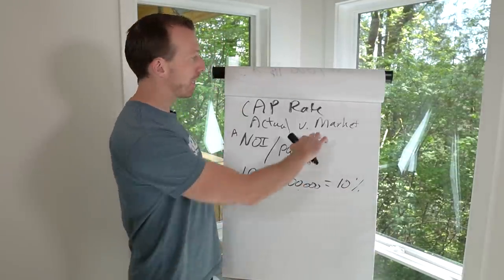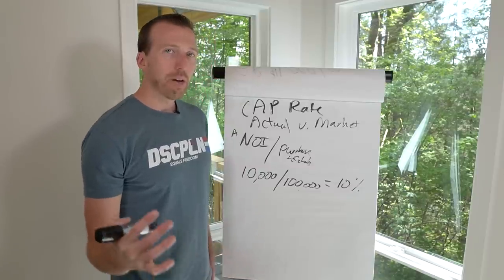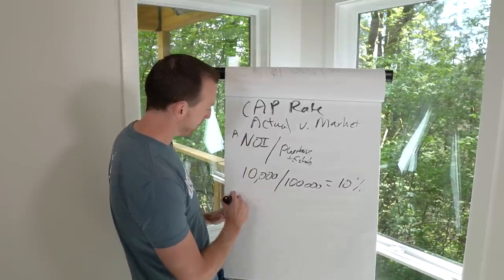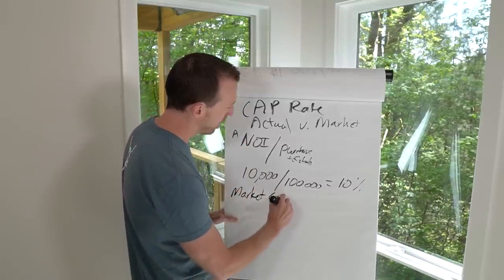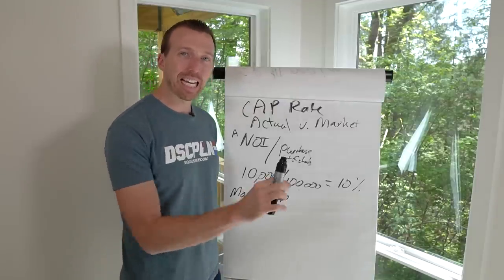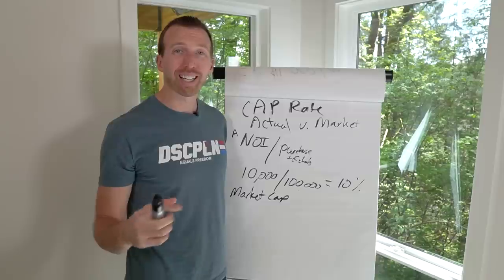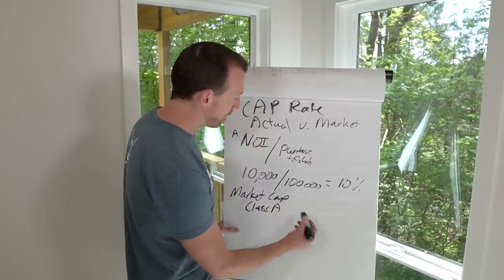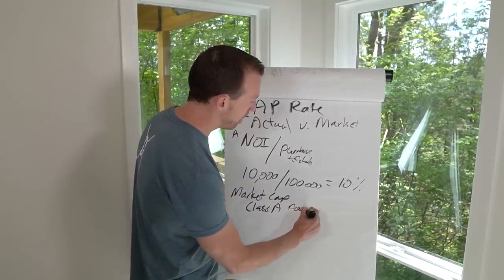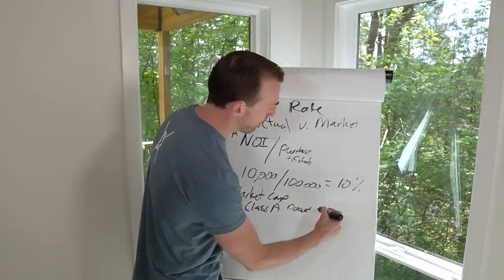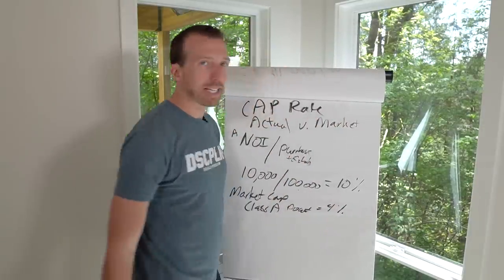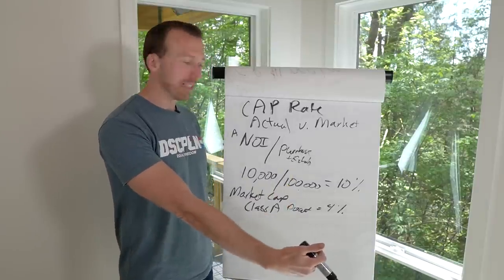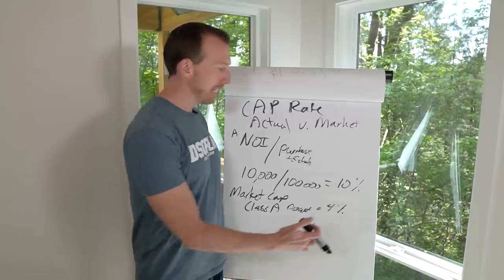Now where people get confused is they look at a market cap rate and wonder: why are people buying 4-cap or 3-cap deals? Market cap rate is what the market says the cap rate is in a specific area for a specific type or class of property. Let's say you're doing a Class A multifamily in downtown Seattle — it's going to be somewhere around 4% cap. The market of downtown Seattle is saying that a Class A multifamily property is worth at a 4 cap.